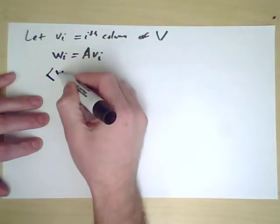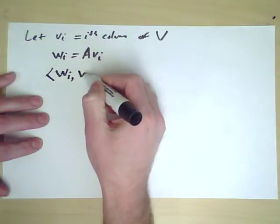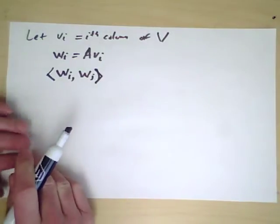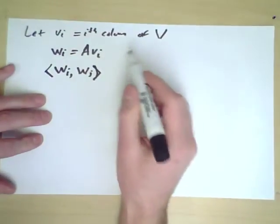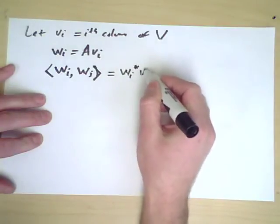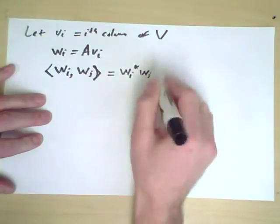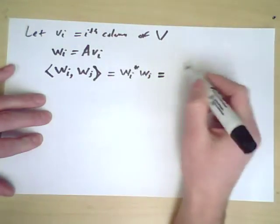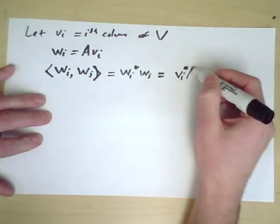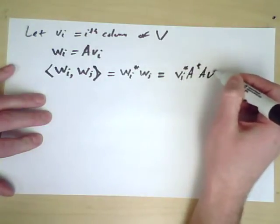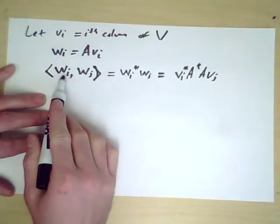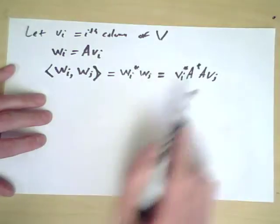Okay, so let's take two of the W's and consider their Hermitian inner product. So Wi inner product with Wj. Of course for matrices what I really mean here is Wi star Wj, just thinking of this as a row and that's a column. And this is using matrix notation Vi star A star A Vj. So for each pair of indices I and J, I get this number.